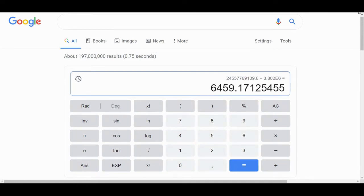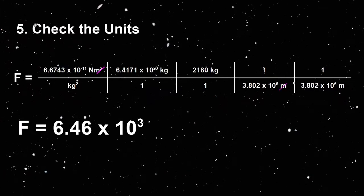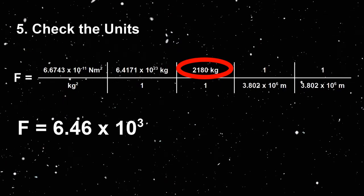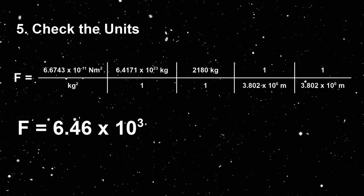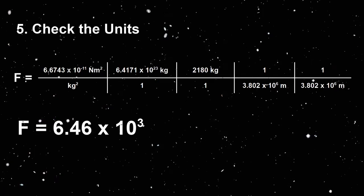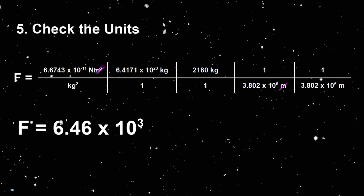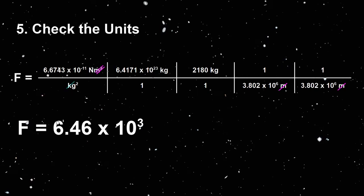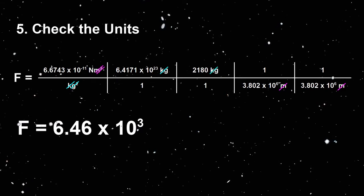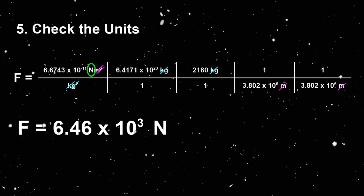Our final step is to evaluate our answer for units and significant figures. The mass of the orbiter is 2,180 kilograms. Since this value has three significant figures, we need to report an answer with three significant figures. So the answer is rounded to 6.46 times 10 to the 3. We can see that the meter squared from the first fraction will cancel both meter units in the last two fractions, and that kilogram squared in the bottom of the first fraction will cancel the kilogram units in the second and the third fractions. The remaining unit is newtons. So the final answer is 6.46 times 10 to the 3 newtons.